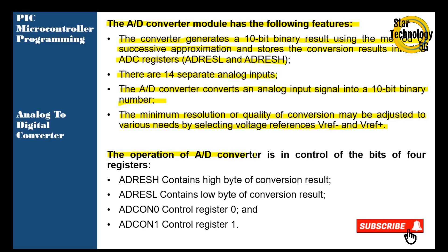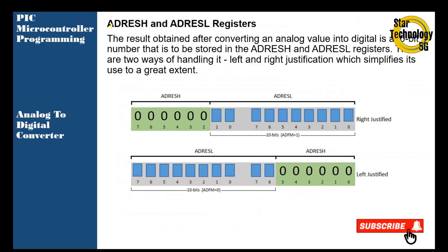The operation of the Analog to Digital Converter is controlled by 4 registers. ADRESH contains the high byte of the conversion result, ADRESL contains the low byte of the conversion. The result obtained after converting an analog value into digital is a 10-bit number stored in ADRESH and ADRESL registers. There are two ways of handling it — left and right justification — which simplifies its use to a great extent, as shown in the picture of ADRESH and ADRESL.